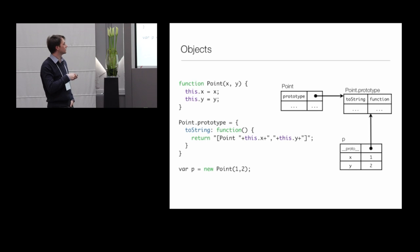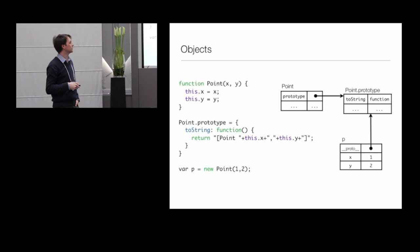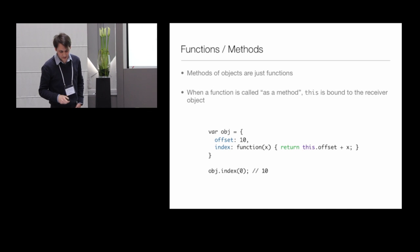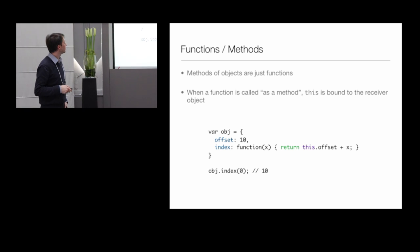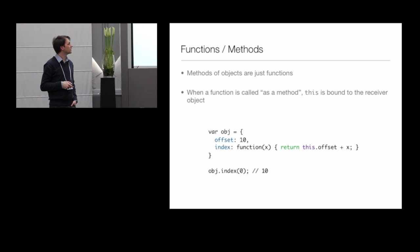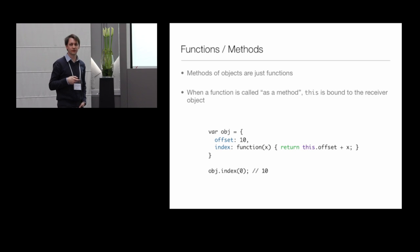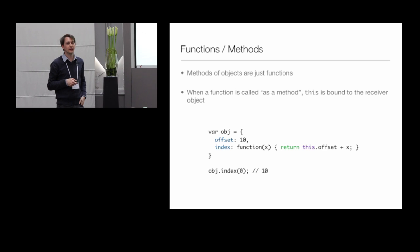You need functions as constructors, the prototype object to store the methods, and methods need to use this to refer to instance state. Pretty complicated for just defining a simple abstraction. In JavaScript, methods are actually just functions declared on objects. The best distinction: if a function mentions the this keyword it's supposed to be treated like a method; if it doesn't, it's treated like a function.